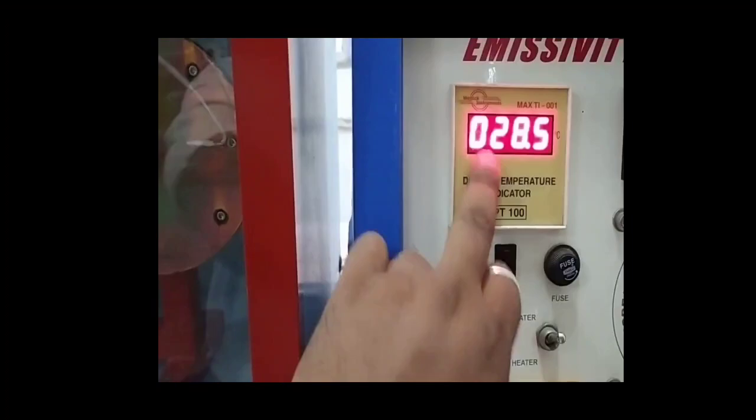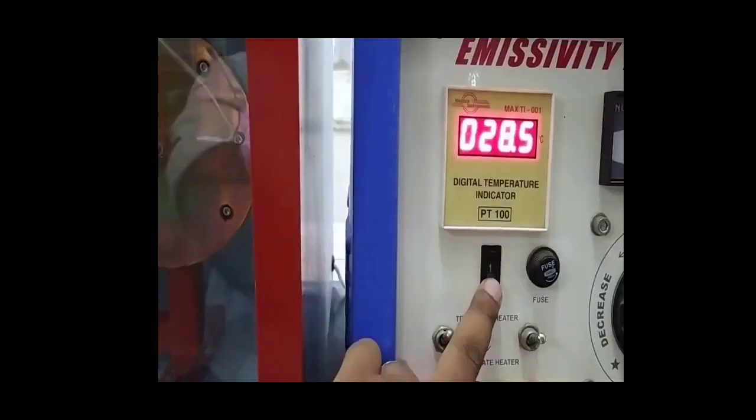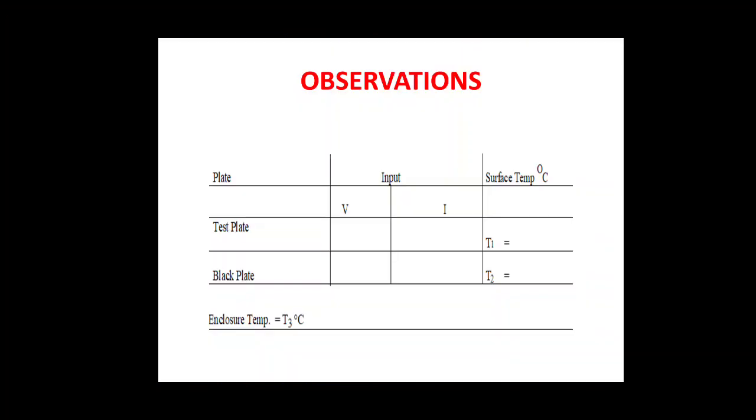After that, we have to wait for some time and then take the temperature reading of both the plates. We have to adjust the temperature of either the black plate or test plate so that the temperature readings of both plates are the same. Then after 10 minutes, again we have to wait for 10 minutes and take the readings. We will see that temperature readings are different, then we have to adjust the knob again to make sure that both temperature readings are the same. Likewise, we have to perform the experiment. The temperature readings for different thermocouples can be shown by pushing a particular button, as you can see here. After taking all the readings, we put them in the observation table, recording the voltage input, current input of the test plate, temperatures T1 and T2, and T3 which is the temperature of the enclosure.